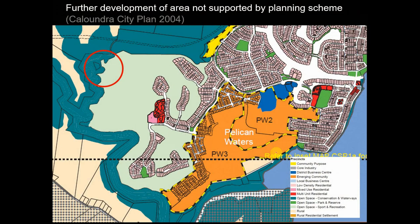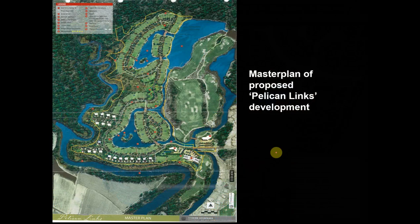Under the planning scheme at the time — the Caloundra City Plan — the area was designated as open space intended for golf course, conservation, and waterways. Council was trying to keep residential development away from Bell Creek and protect the fisheries values of Palmerstone Passage. But the landowner saw the profit to be made in developing the land — essentially establishing a big residential area with a hotel and units worth hundreds of millions of dollars, if not billions.